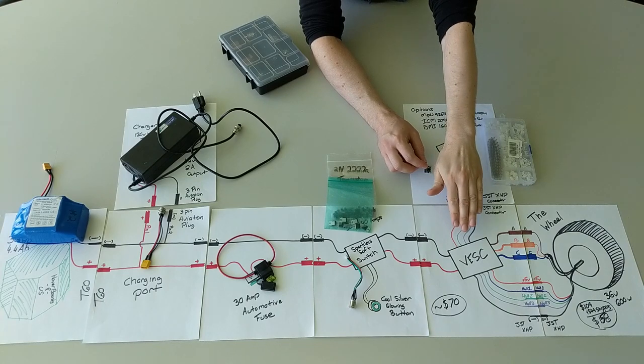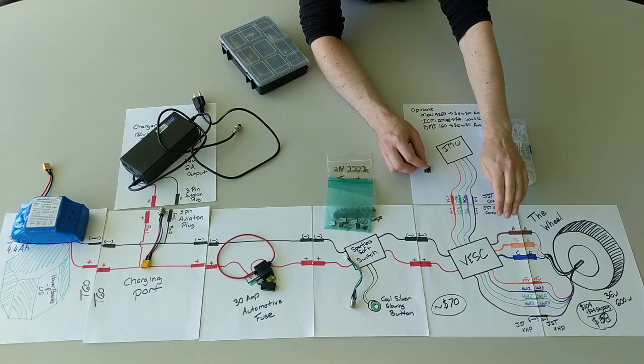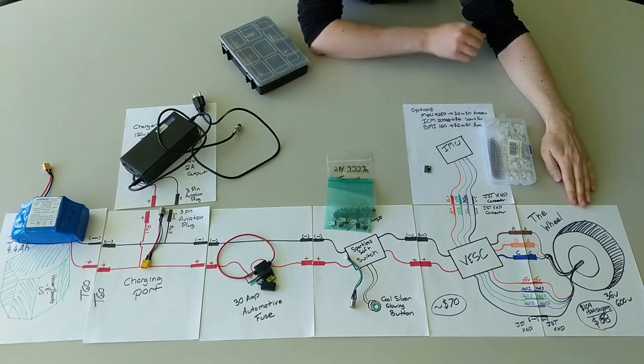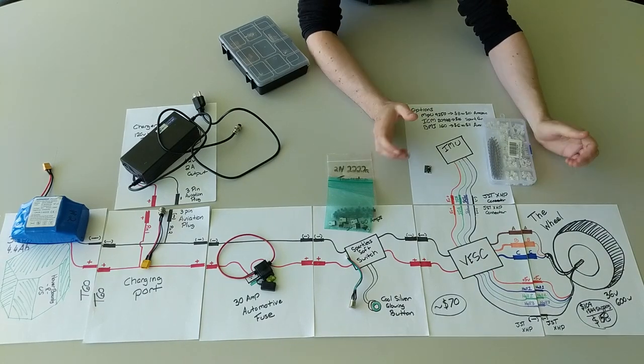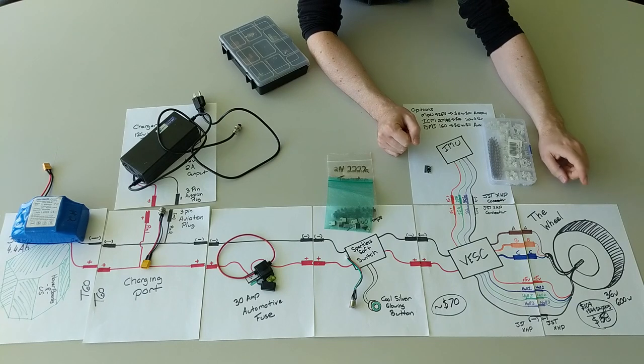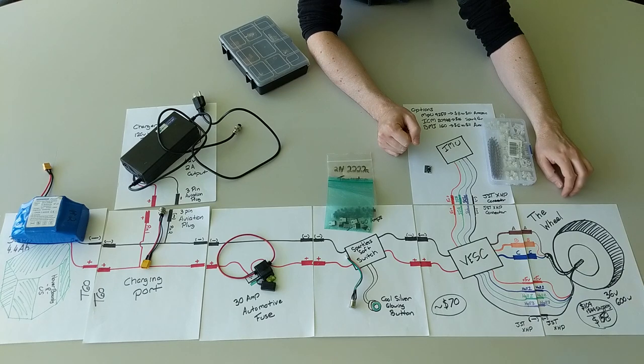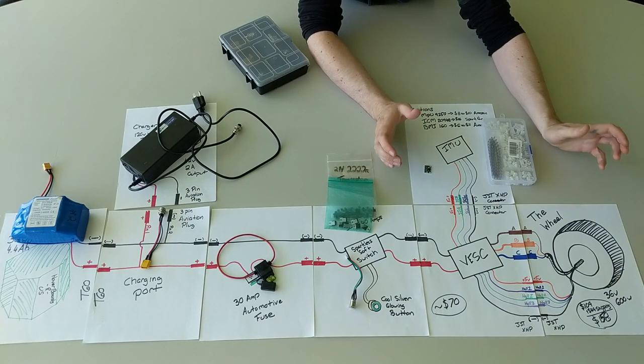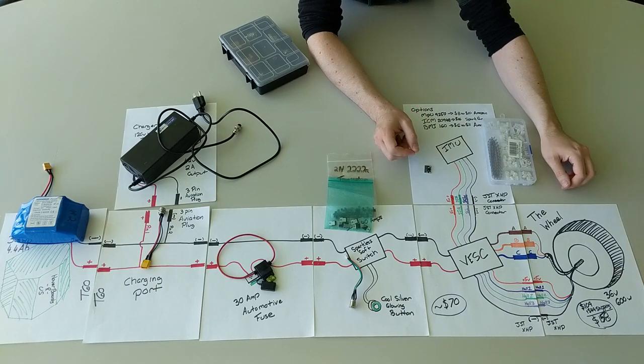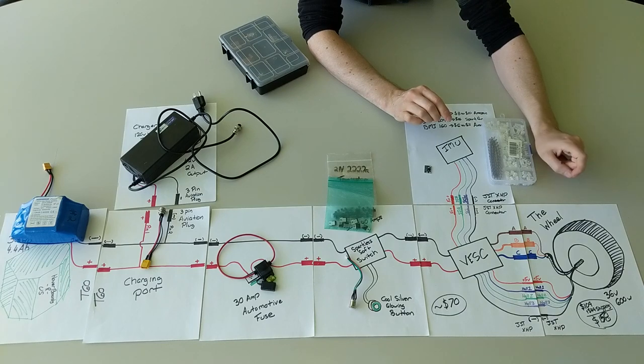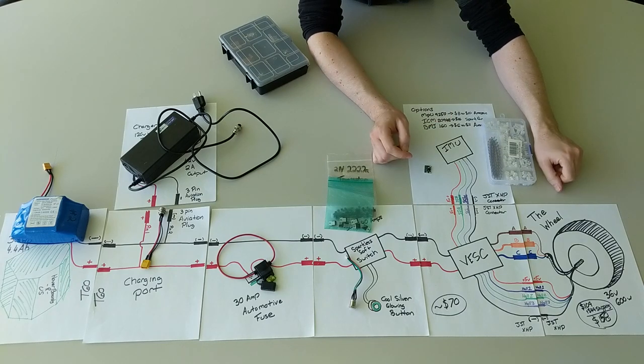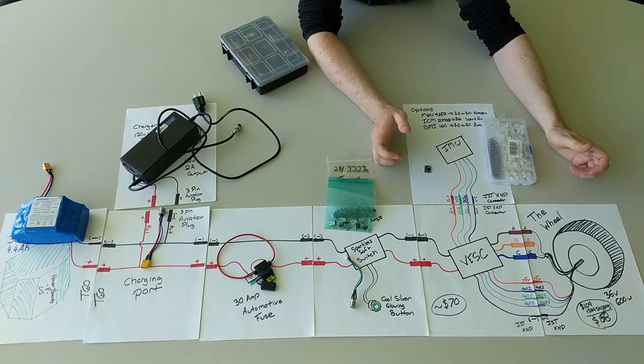Now the VESC on the other side is going to be connected to our actual one wheel. The one wheel is one of the few components that I didn't have around the shop, so I've ordered this in from China. The order has been out for about a week now. I don't really know when it's going to show up because shipping times have become unpredictable. This wheel cost me $109 plus $49 in shipping.